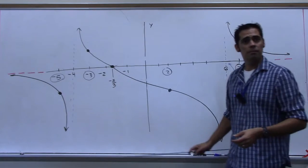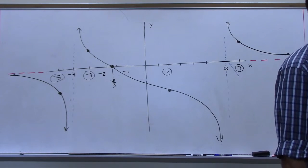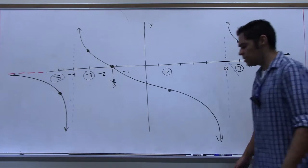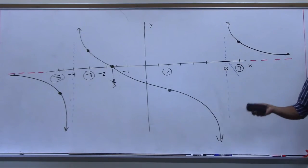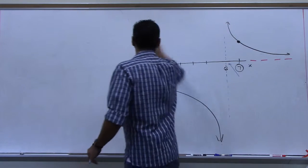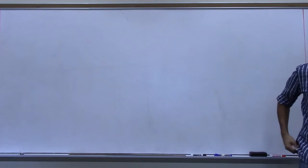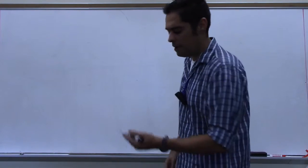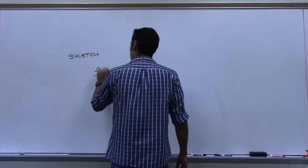We don't have enough time to start another example. For homework, sketch a rational function — another Case 1. We'll come back next class and do Case 2 and Case 3. You also have the 15 practice problems to work on. Submit the rational function graph at the beginning of next class.